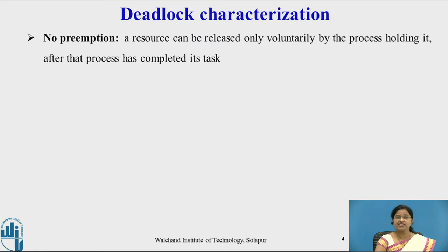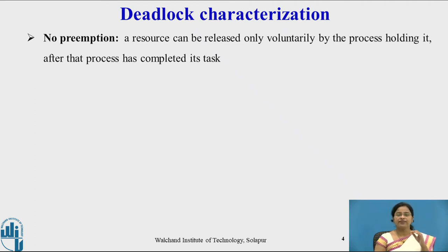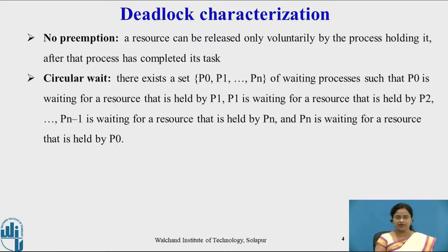The next condition is no preemption. No preemption means a resource can be released only voluntarily by the process holding it after that process has completed its task. Once a resource is allocated to a process, that resource is never de-allocated until the process completes its execution — it is never preempted.